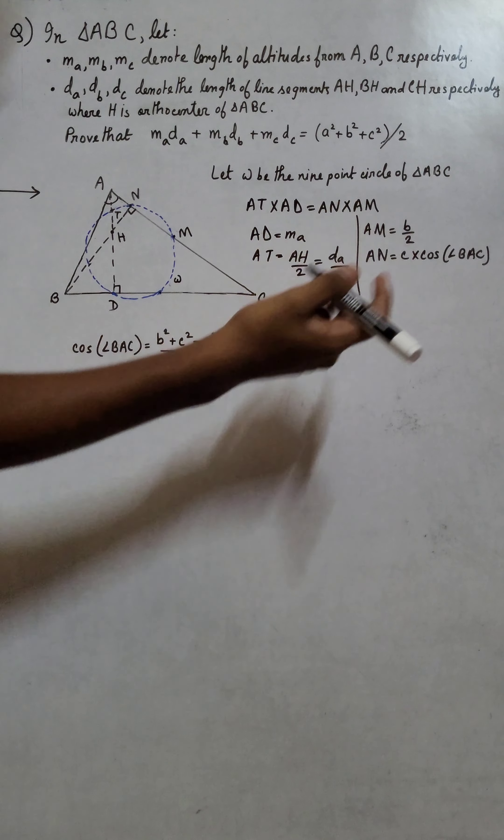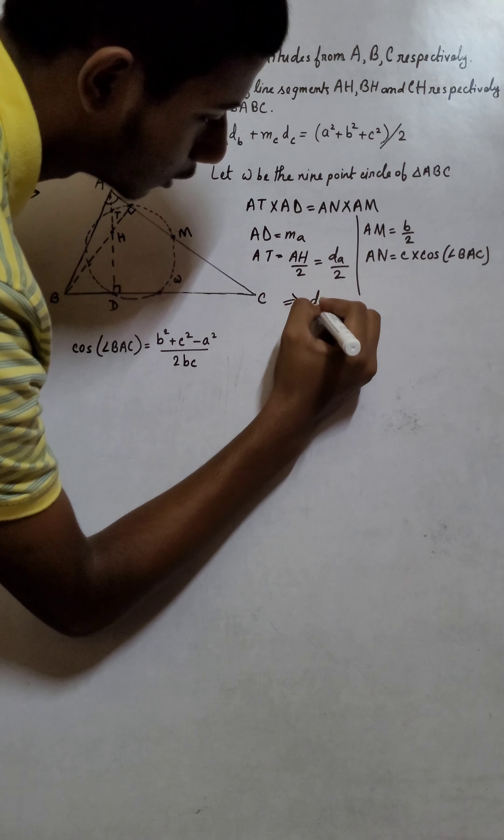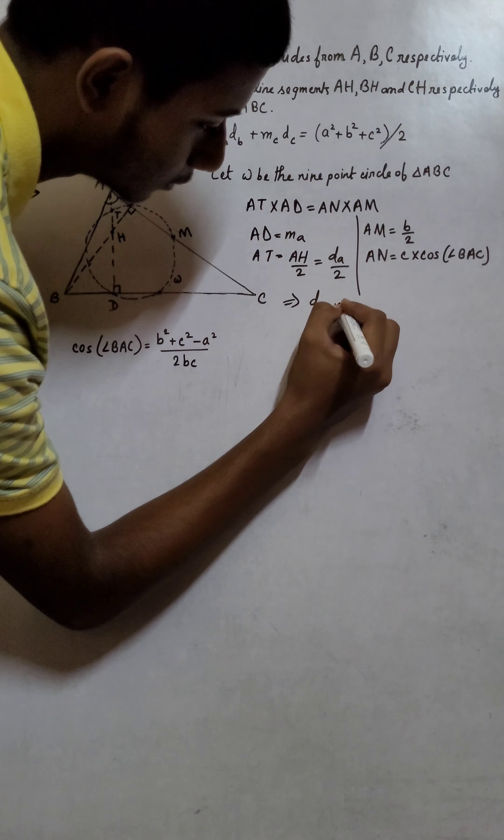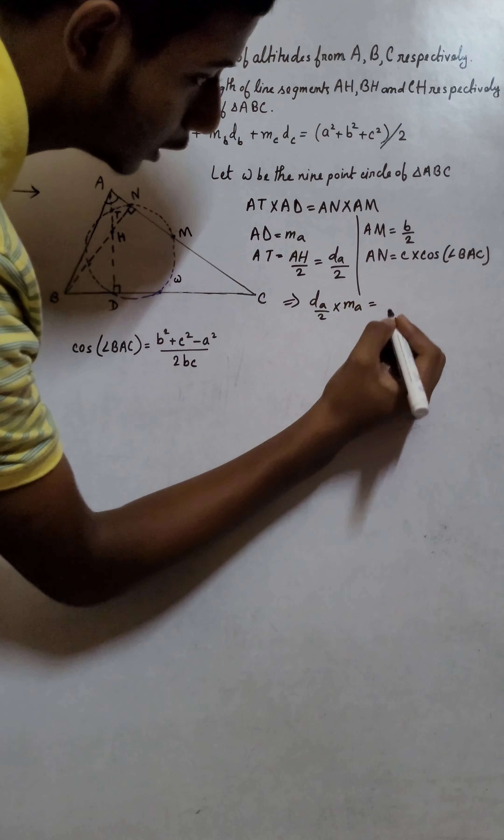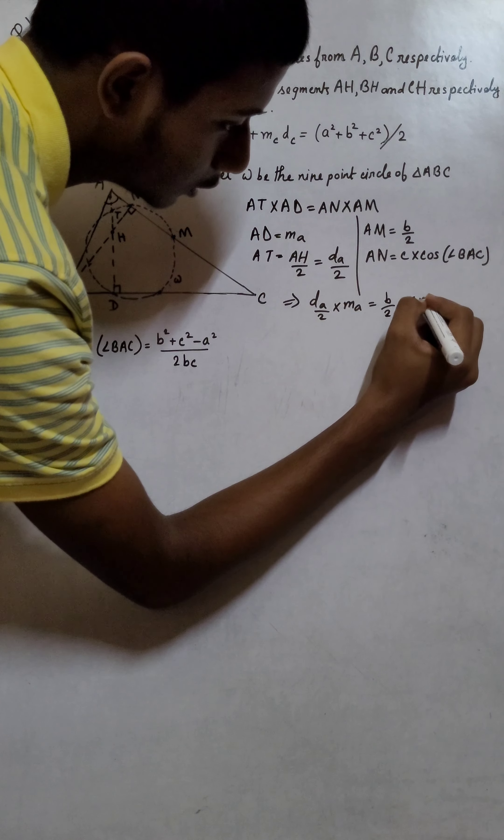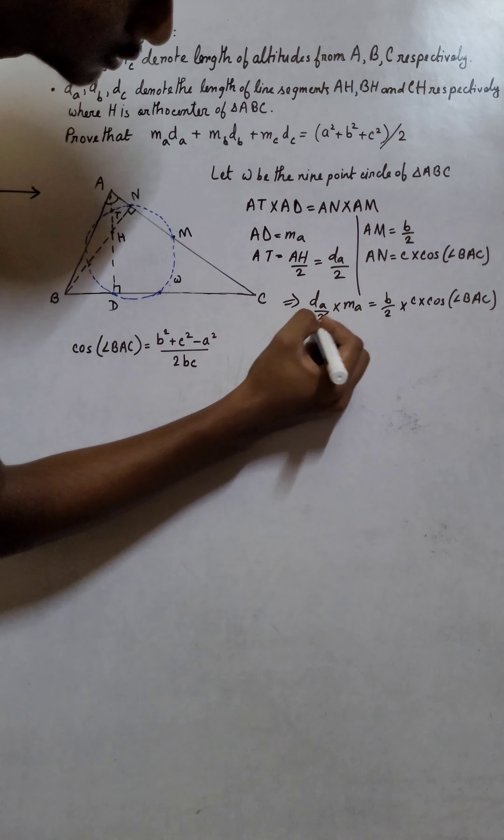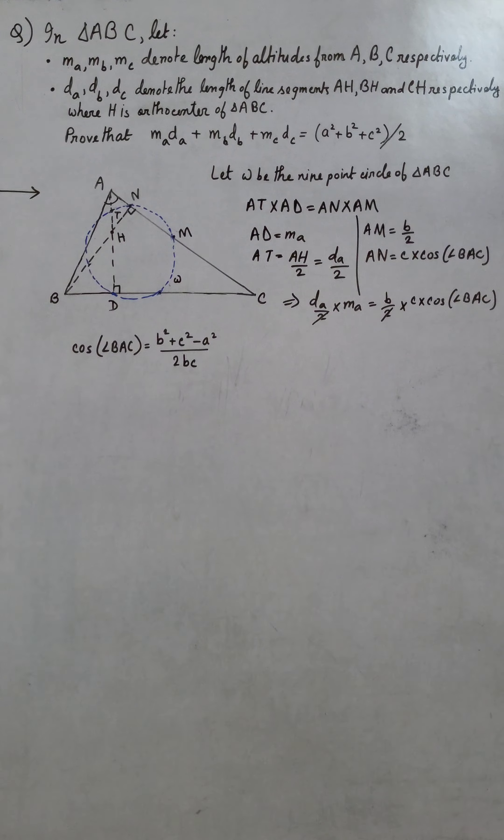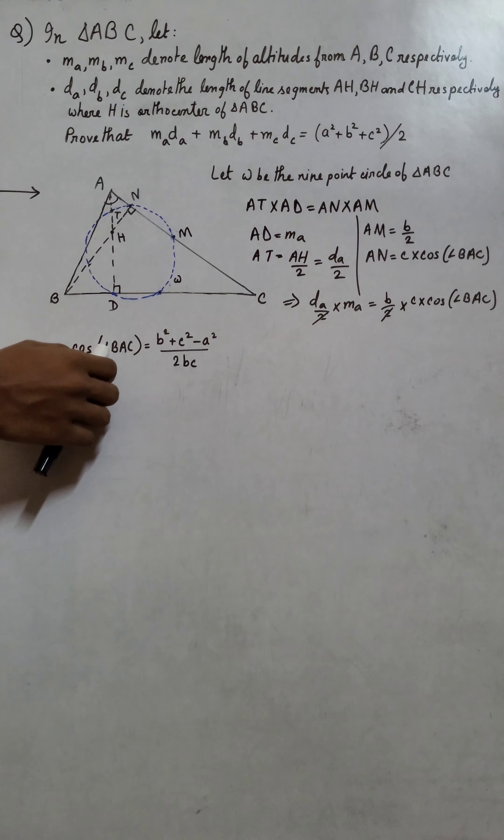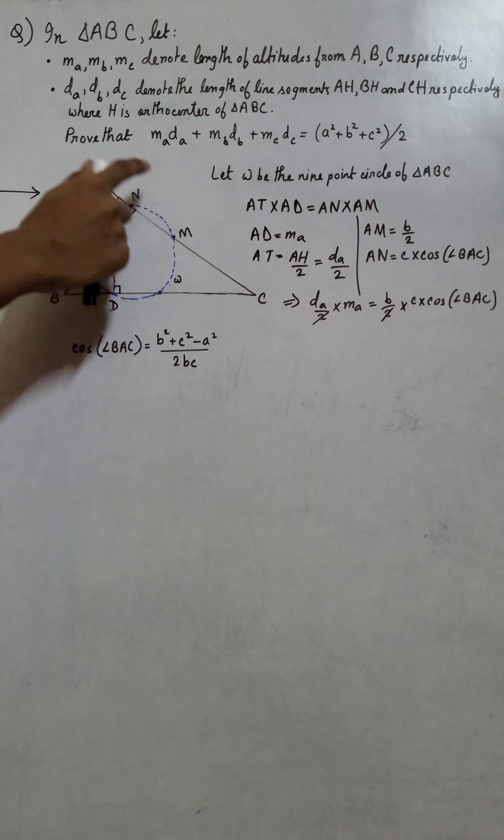Now we multiply these and equate them. This implies DA/2 times MA equals B/2 times C times cos(angle BAC). We cancel 2 from both sides. From the cosine rule, cos(angle BAC) equals (B² + C² - A²)/(2BC).